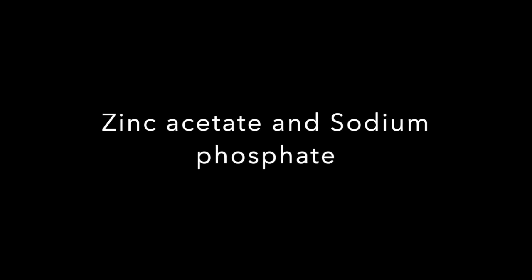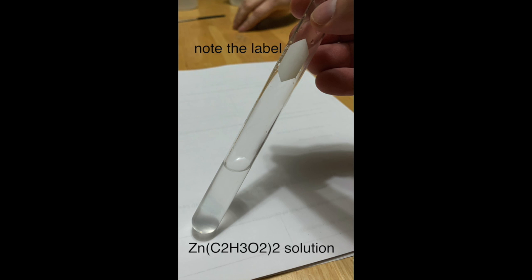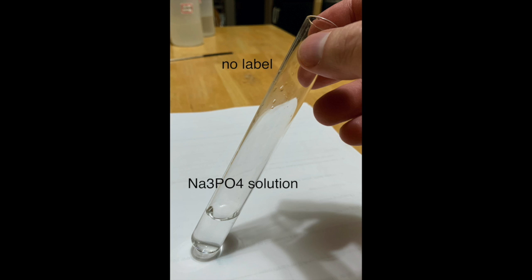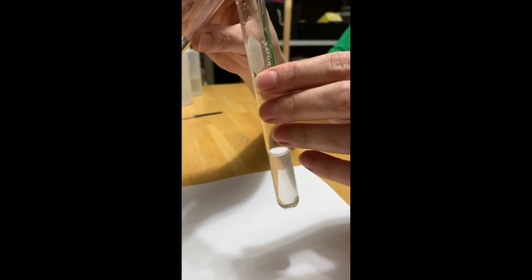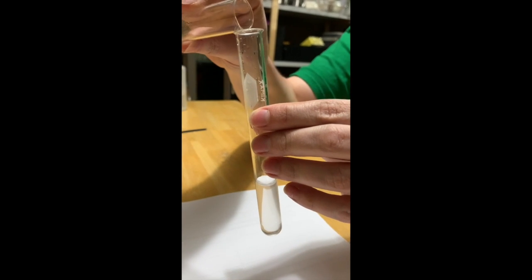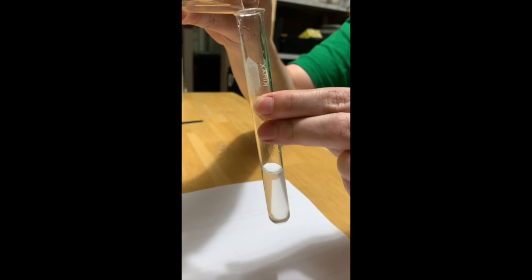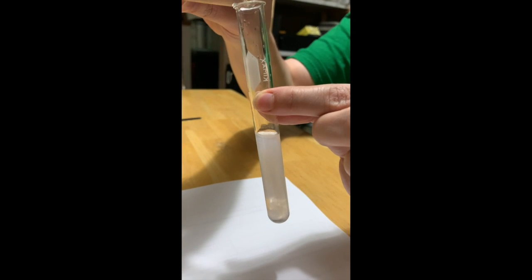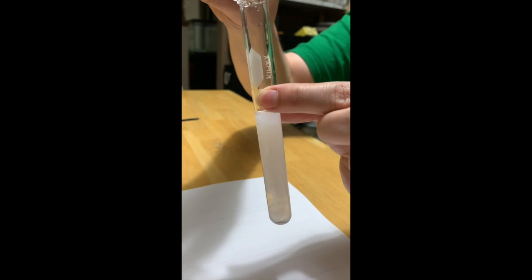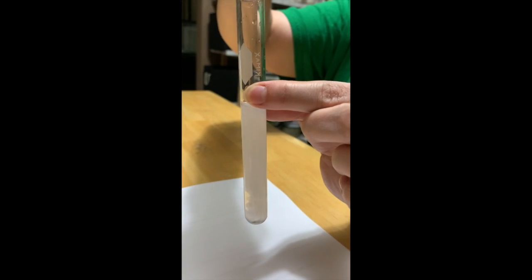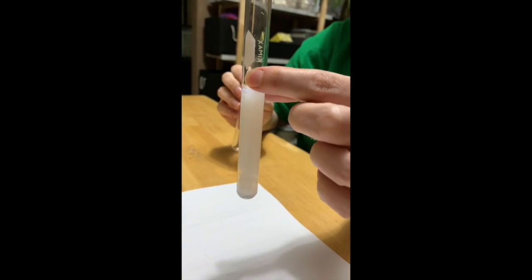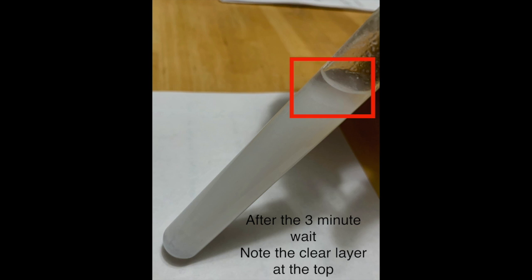Now the zinc acetate sodium phosphate double replacement reaction. So there's the zinc acetate solution. There is the sodium phosphate solution. Same thing. We're going to add those two solutions together and watch what happens. And then again, through the magic of movies, three minutes later, what that looks like.